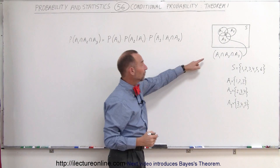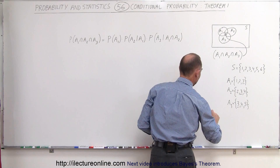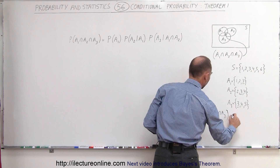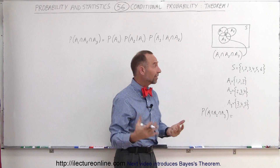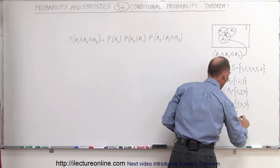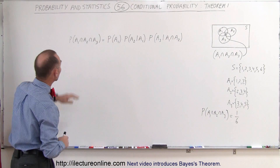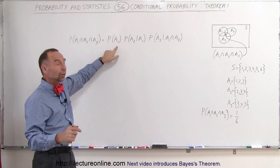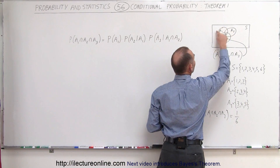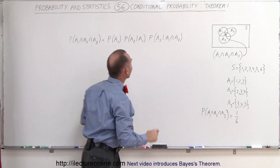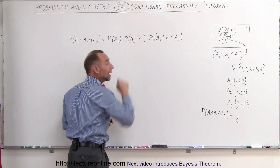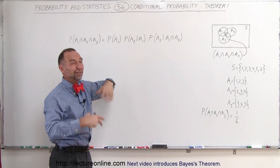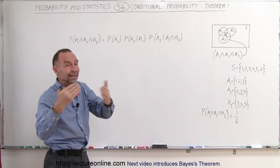So the probability of getting A1 ∩ A2 ∩ A3 is 1 out of 6, since there's only one possible outcome (number 3) out of a total sample space of 6. The theorem says you can find the same result by computing: the probability that A1 occurs, times the probability that A2 occurs provided A1 has occurred. Of course, if A1 has not occurred, there's no possible intersection with A2.